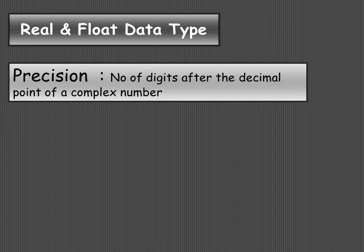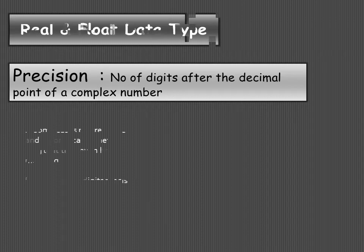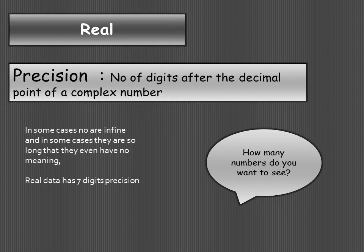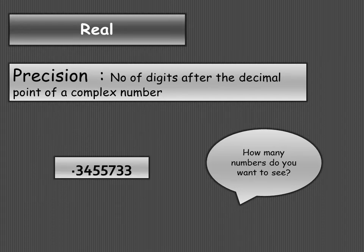Each of these data types stores decimal values, but the difference is in precision — that is, the number of digits after the decimal point. In some cases numbers are very long and some digits have no meaning, so precision defines how many digits you want to display after the decimal. REAL data type has seven digits of precision, meaning after the decimal you can use seven digits.